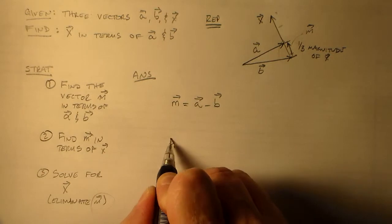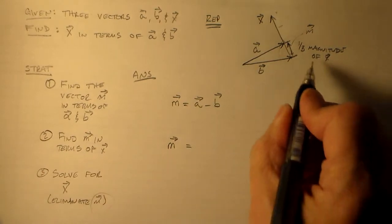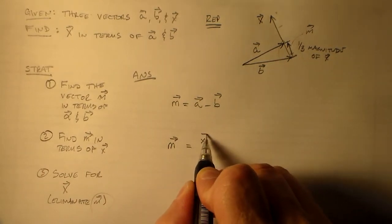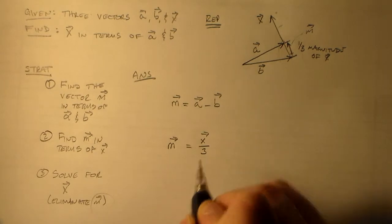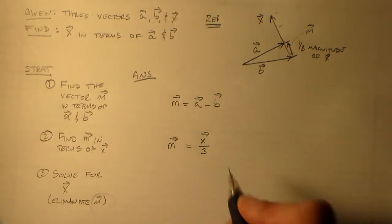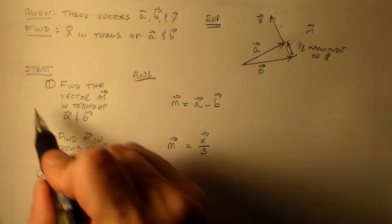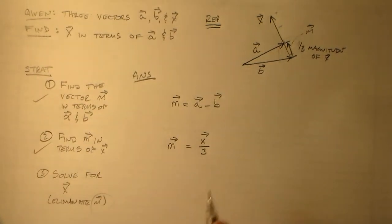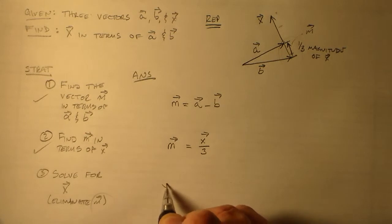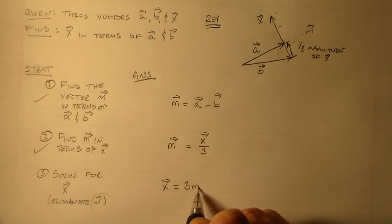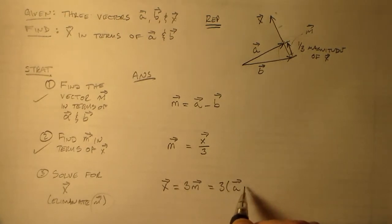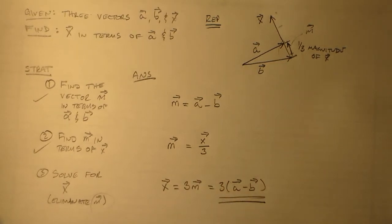So m is also equal to, I just said, one-third of x, right? Scaled by a factor of one-third. It's x scaled by the factor of one-third. Bang, we've got that guy. So, check, check. Solve for x. We have x equals 3m, and then we just eliminate m by substituting a minus b, and that's our answer. 3a minus b.